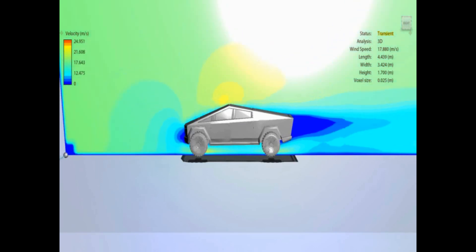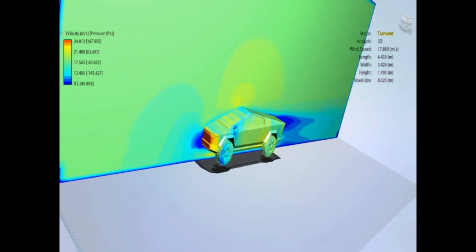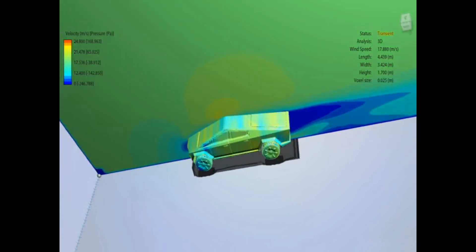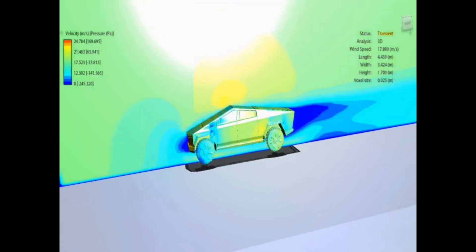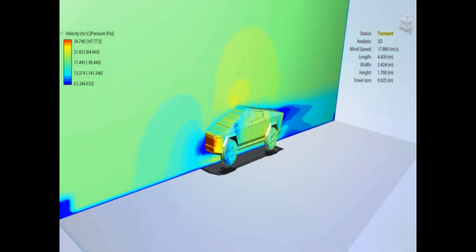Again, still at 17.8 meters per second, 40 miles an hour, showing air velocity, now showing actual surface pressure on the car. So, towards the red end of the spectrum, that's high pressure, blue end's low pressure,